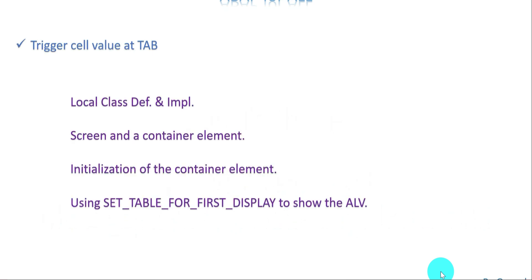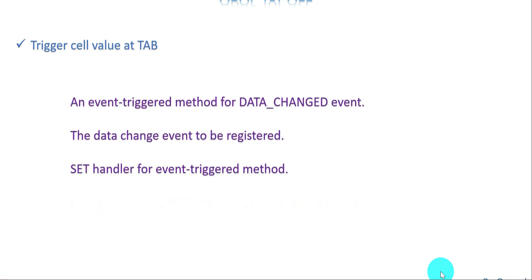The first slide covers how to display object-oriented ALV. You need a local class definition and implementation, a screen with a container, and you initialize the container with the relevant object and method. Consider that a parent, then you need a child reference with a different method. Keep two internal tables ready: one holds all the field catalog information — field element, text, etc. — and the other holds the data. Once ready, call the set table for first display method to show the ALV.